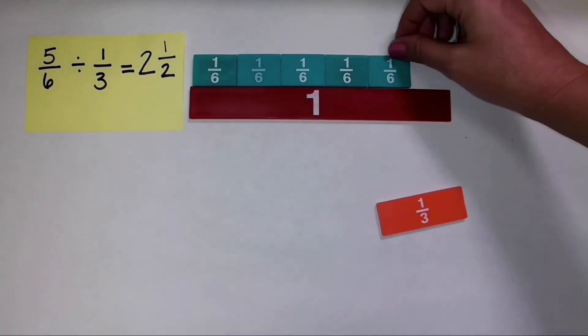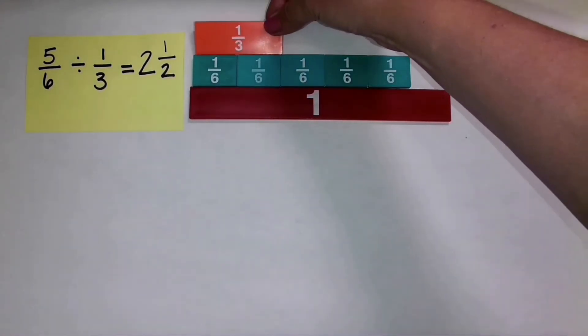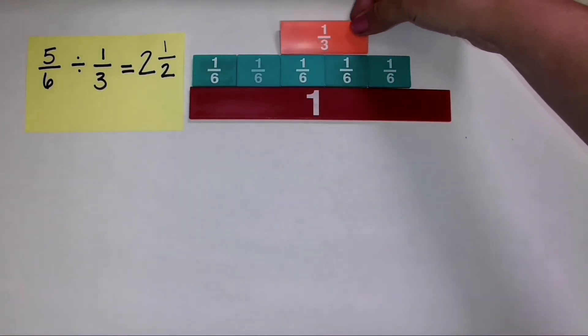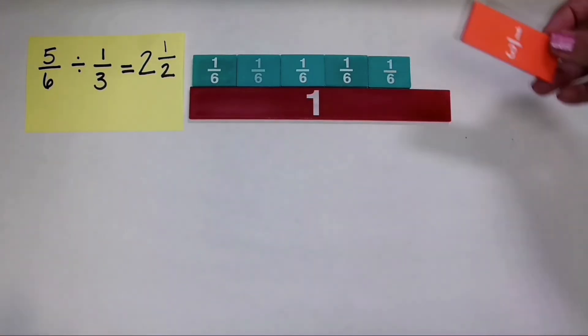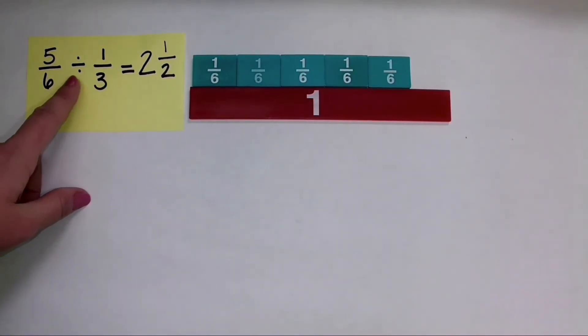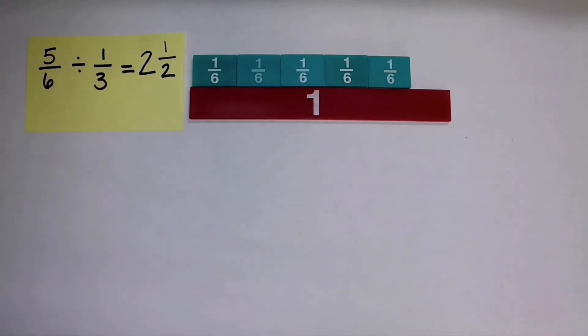Let me show you how we did that again. We asked how many groups of one-third can we make? We can make one full group, a second full group, and then one-half of the next group. So when I have five-sixths and we divide five-sixths into groups of one-third, how many groups can we make? We can make two and one-half groups.